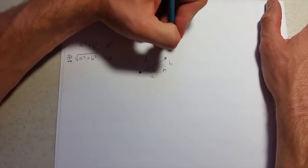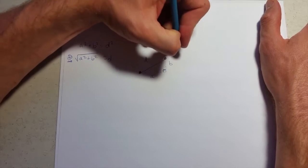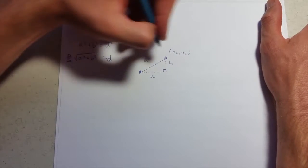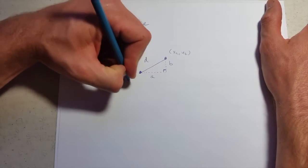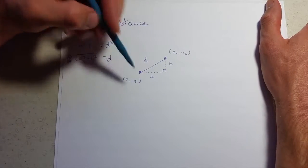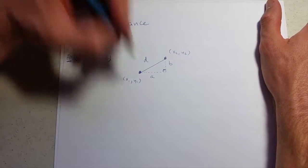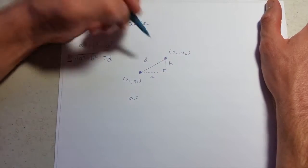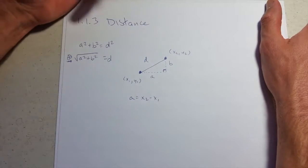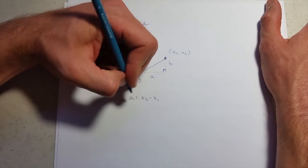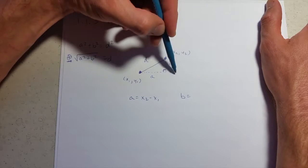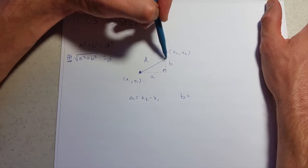Now how do I get a and b? Well, we're going to have two points here. So we'll call this point the second point, x2, y2, we'll call this one the first point, x1, y1. So a is going to be the difference between the two x's. Now I'm going to write it as x2 minus x1, these are not squares, these are subscripts.